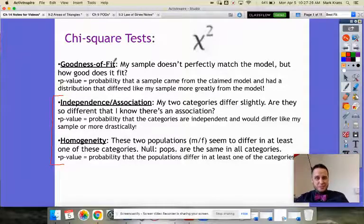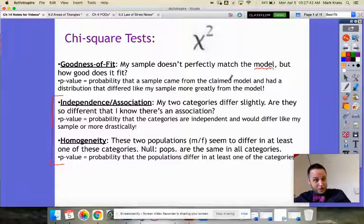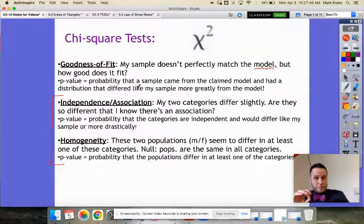Goodness of fit is pretty obvious because there's some model that's suggested and we're saying my sample doesn't perfectly fit the model, but how good does it fit? The p-value is the probability that a sample did come from the claimed model and yet had a distribution that differed from the model like my sample did or more greatly.